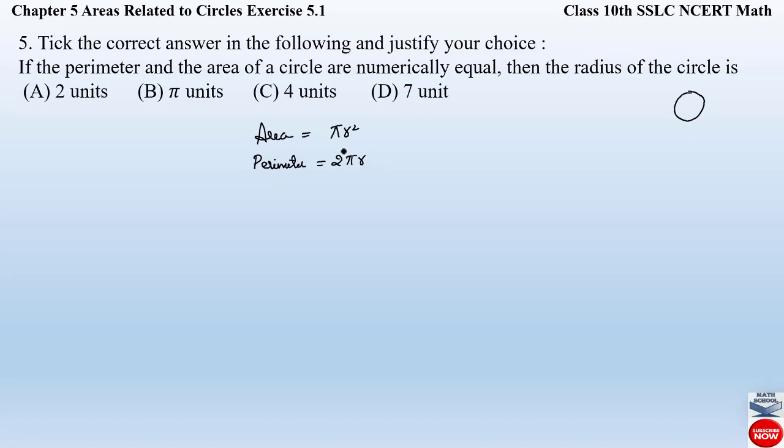So they are saying that these two values, that is the area and the perimeter of a circle, are numerically equal. So we have to equate these two formulas to find out the value of the radius. So let us do that. Area is equal to perimeter means πr² = 2πr.